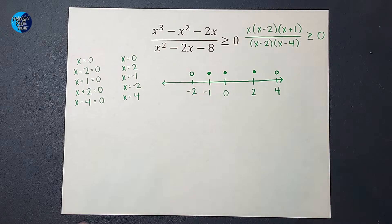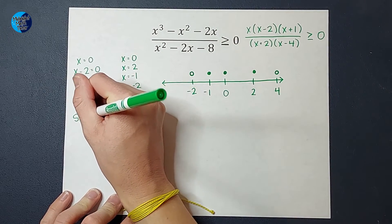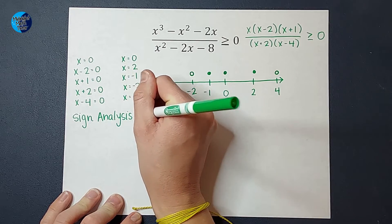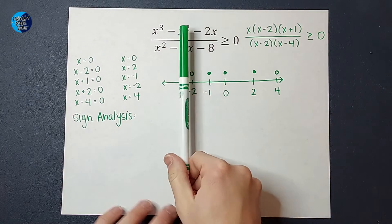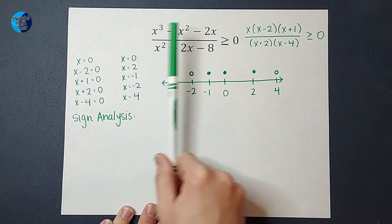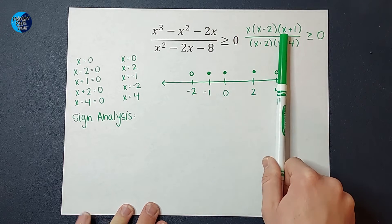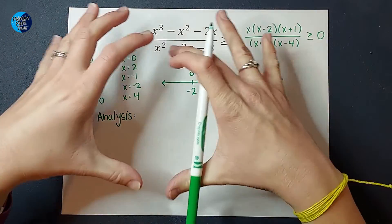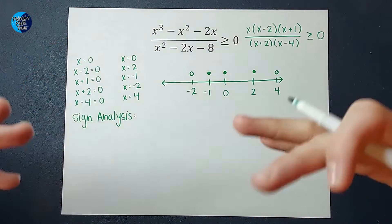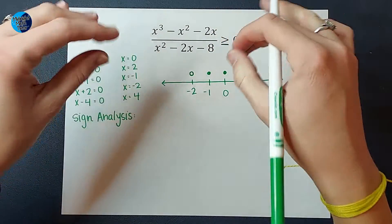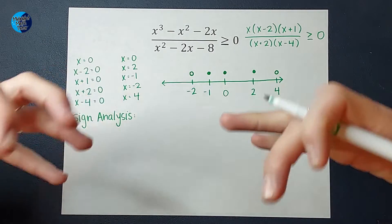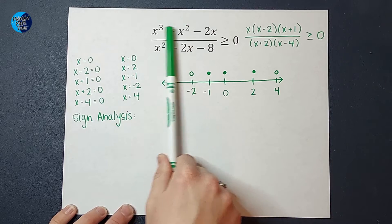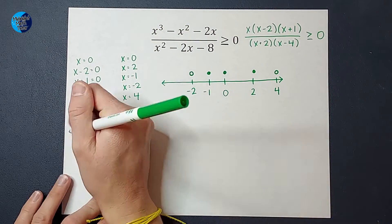From here, we are going to do something called sign analysis. The gist is I'm going to figure out for each of these regions — to the left of negative 2, between all of these, and to the right of 4 — when I plug in a number in that region for x, is my output positive or negative? The cool thing about sign analysis is I don't really care what the number answer is, I just care if it's positive or negative. Let's pick negative 10 for the region less than negative 2.